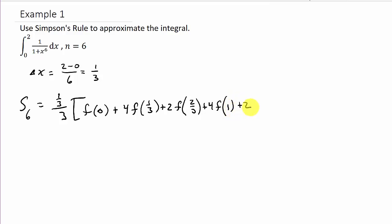Plus 2 times f of, add 1/3 to that. Well, remember, 1 is 3/3, so that would be 4/3, plus 4 times f of, and then add 1/3 to that, that would be 5/3, and then plus, let's see, that's gonna be 2 times f of, and then 1/3 plus that, that's gonna be 6/3, which is 2. So you can see, we're at the last one, so we know there's not gonna be a 2 in front there. That's just gonna be f(2).